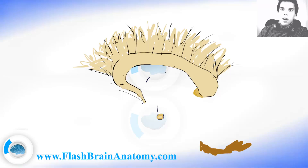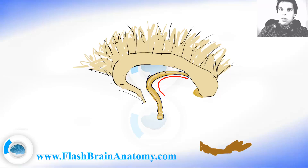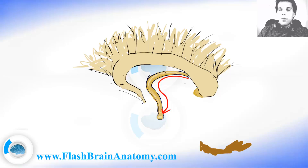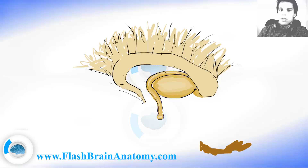Then I illustrated the mammillary bodies here. The nerve fibers come to mammillary bodies, and that's the fornix. These nerve fibers are coming from the hippocampus and go to the mammillary bodies. When these nerve fibers reach the mammillary body, there are other nerve fibers leaving the mammillary body and going to the thalamus. There is a thalamus on the other side too, so both thalami are connected with the interthalamic adhesion right here.